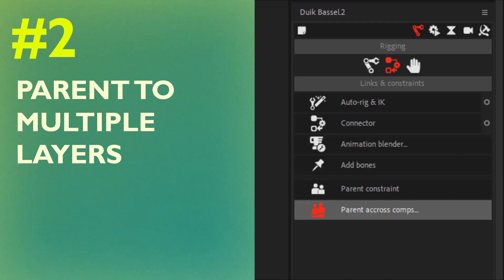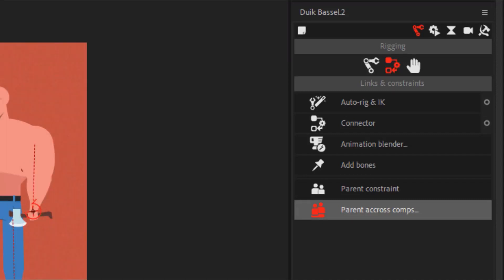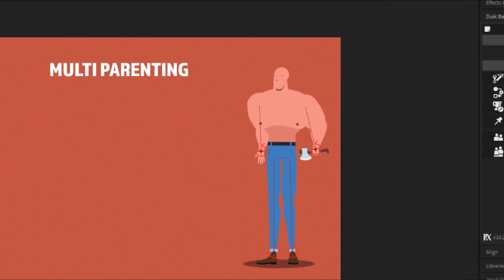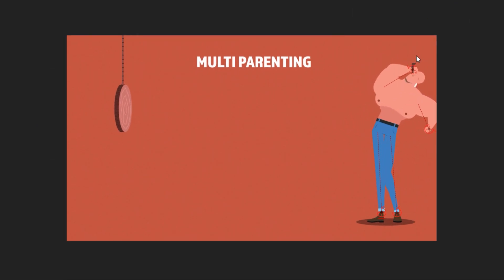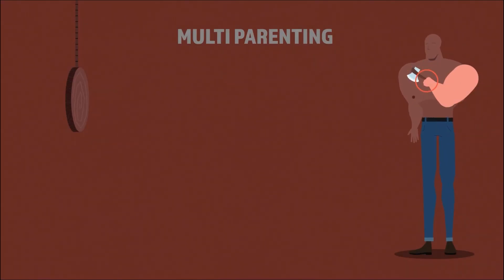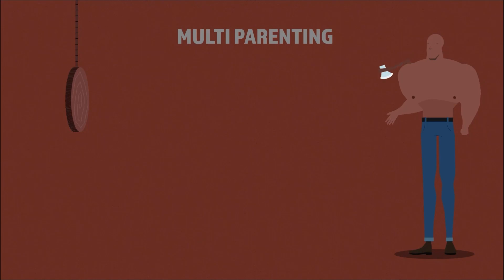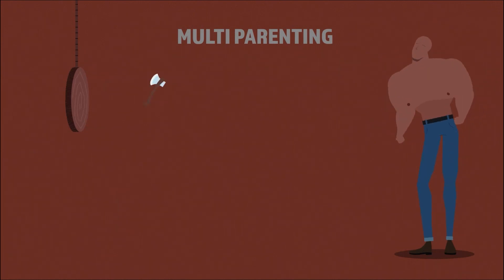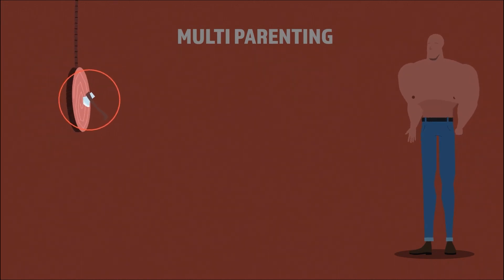Tip number two: animate parenting. Did you know that Duik has a tool called Parent Constraint, which allows you to keyframe the parenting of a layer? In this example, I have the axe handle switch between three different parent layers — and in some parts it's not parented to any layer. It starts parented to the right hand controller, then when it's in the air it's not parented to anything, then it's parented to the left hand controller for the catch and the reeling back, and as it hits the target it's parented to the target shape layer.